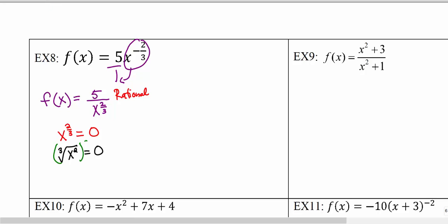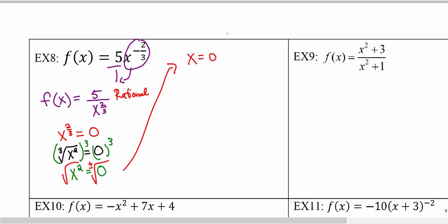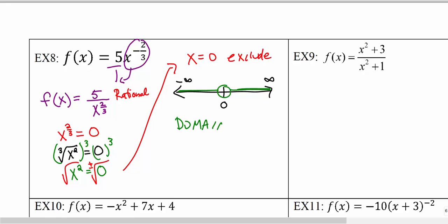To solve, we cube both sides to eliminate the cube root, giving us x squared equals zero. Then we take the square root of both sides — plus or minus — which gives us x equals zero. This is the only value we need to exclude. On the number line from negative infinity to positive infinity, we mark zero with an open circle, so our domain is (-∞, 0) ∪ (0, +∞).